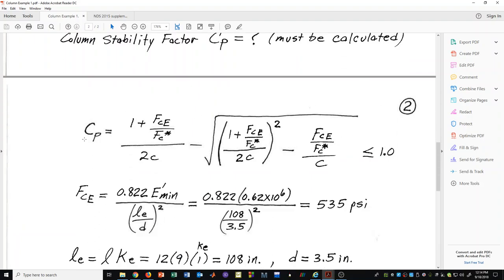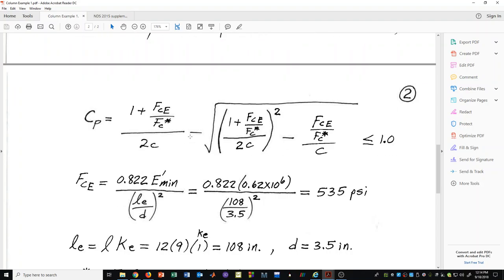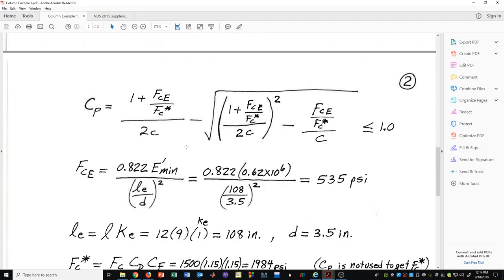Here is the formula for calculating C sub P and it is always going to be a number less than or equal to 1.0. If you were somehow to accidentally calculate something greater than 1, you would know that you had made a mistake.